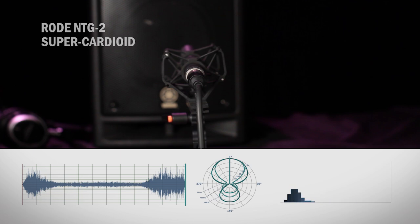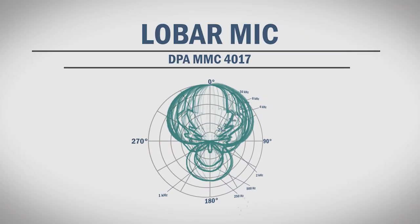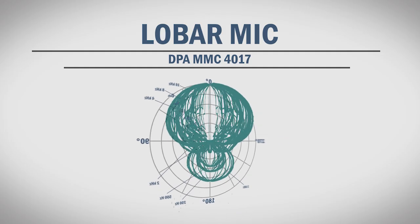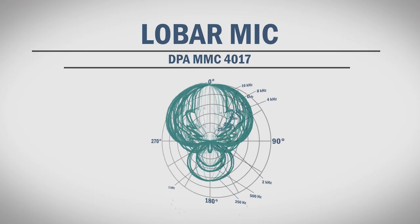It's clear that this mic has a very narrow pickup in the front, as well as slightly increased sensitivity from the back. When you want the extreme in microphone directionality, you've got the lobar pickup pattern. This pattern is only achievable in shotgun microphones. These mics have long interference tubes to cancel out the sound from the sides. This is the polar pattern for the DPA MMC 4017. Notice how widely the pickup ranges depending on the frequency.